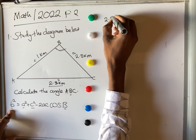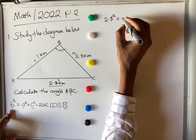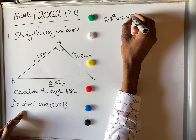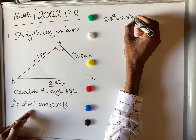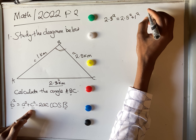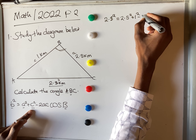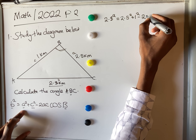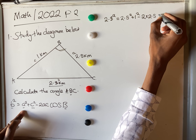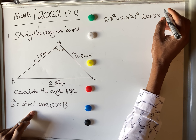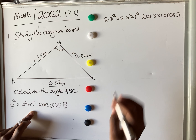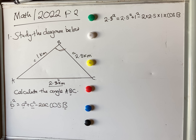So we have 2.8 squared equals a squared, which is 2.5 squared, plus c squared, which is 1 squared, minus 2ac — where a is 2.5 and c is 1 — then times cos B. We don't have cos B because that's the value we want to find, so we need to use the calculator properly.